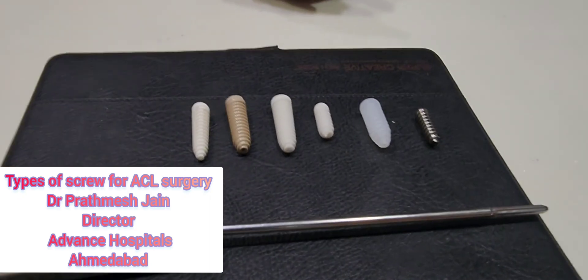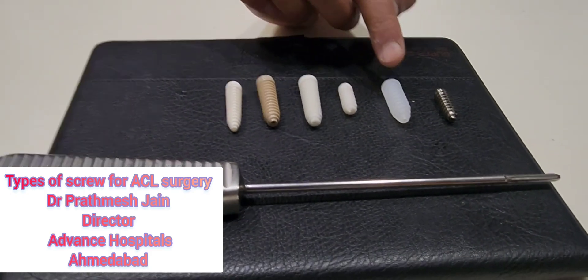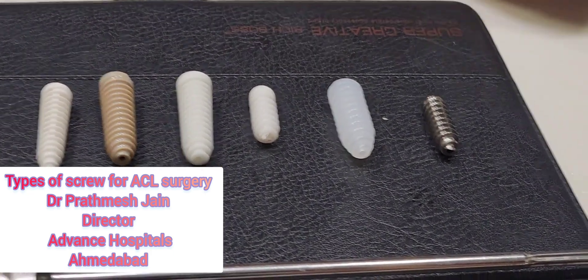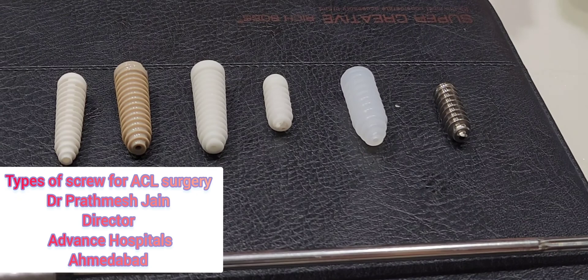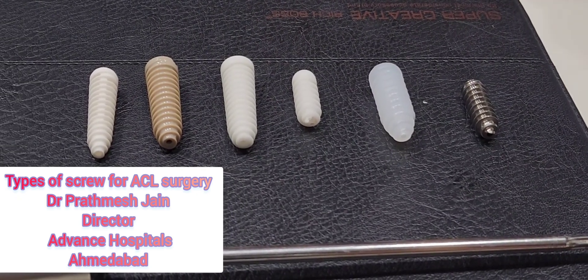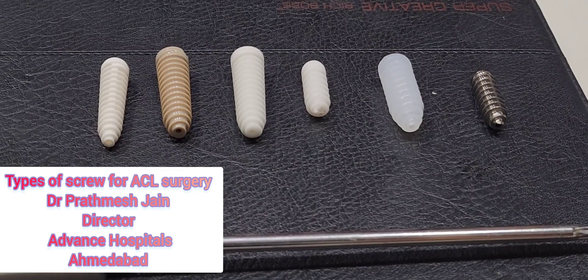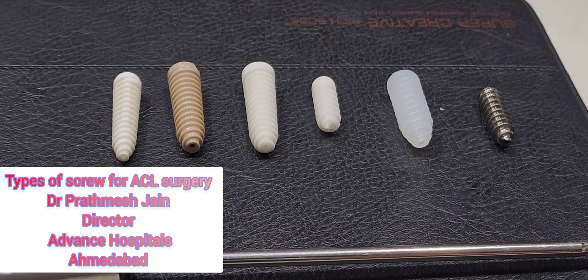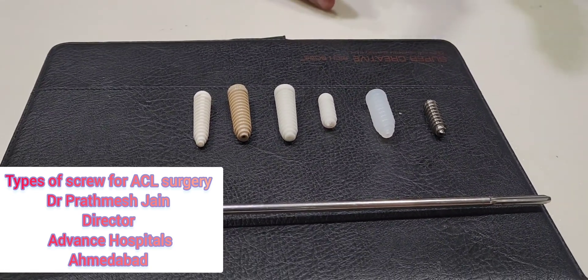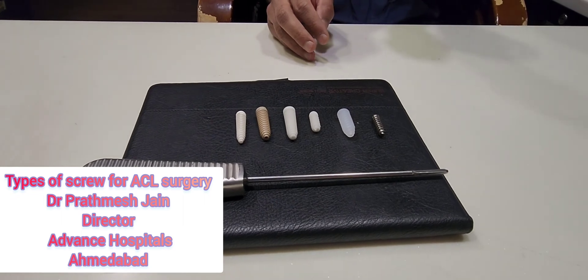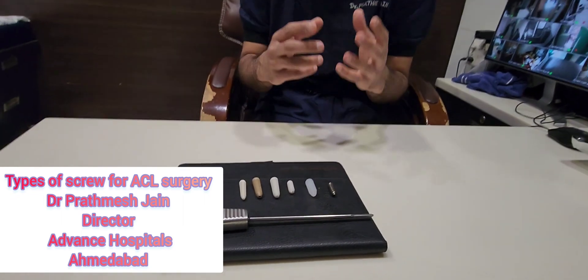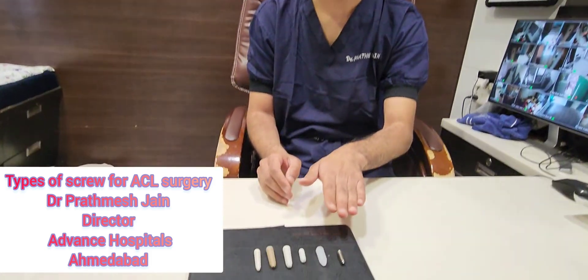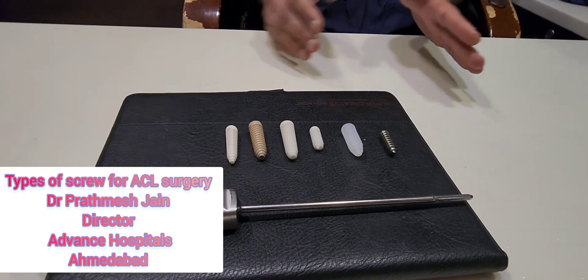Then came the era of the bio-absorbable screw, also called the Bio RCI screw. This is made up of PLLA material and is documented as absorbable. However, problems arose because it was giving some sort of sterile reaction. Nowadays we have stopped using bio-absorbable screws because in very few patients they may cause sterile reactions, cavity formations, and discharges. Bio-absorbable screws are now largely out of use.